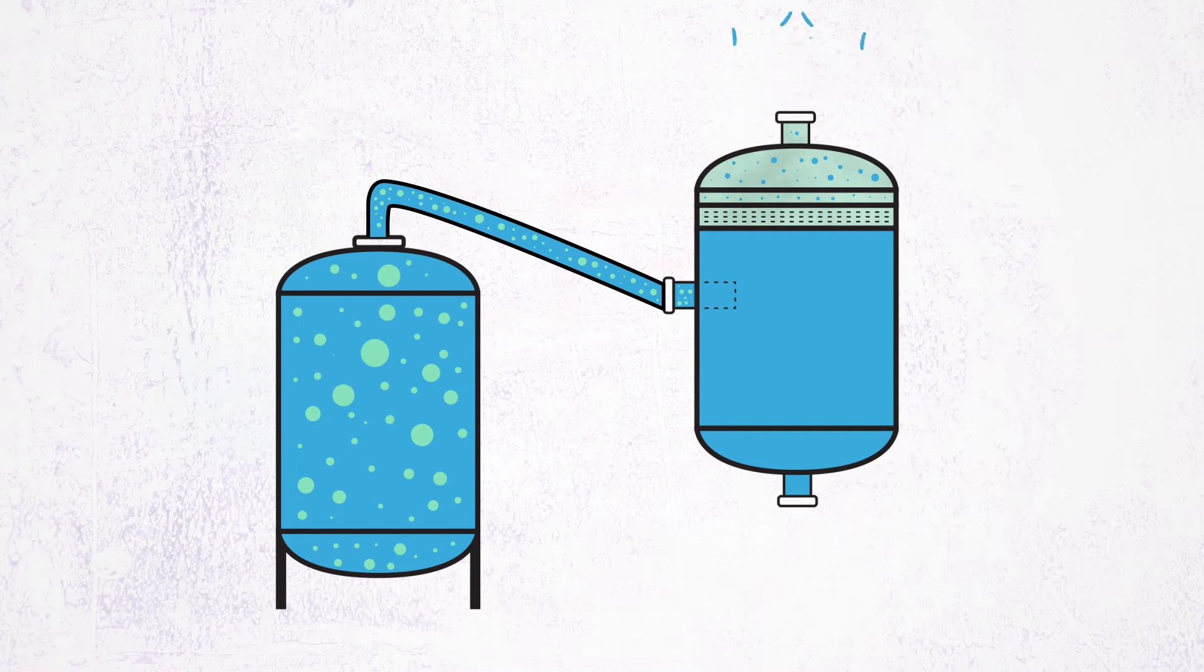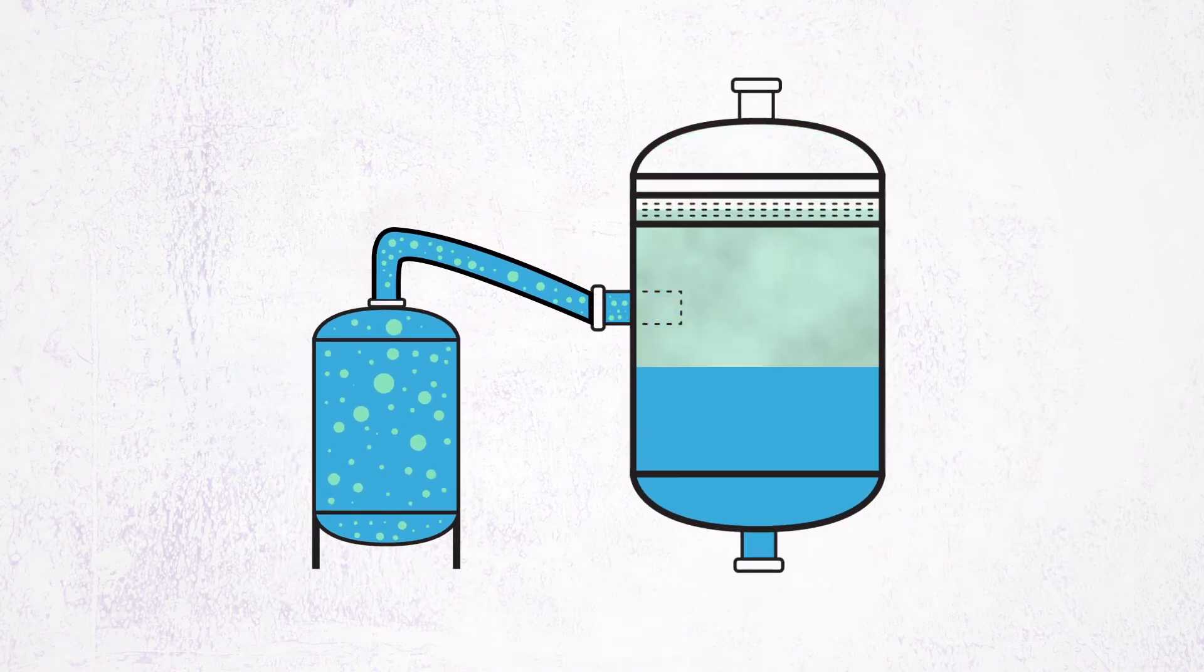As a rule of thumb for reactive upset scenarios, knockout tanks typically need to be two to four times the volume of the process vessel that could discharge into it.